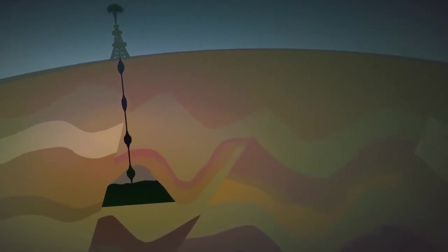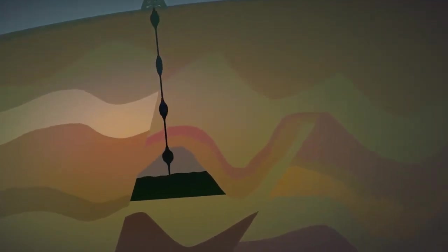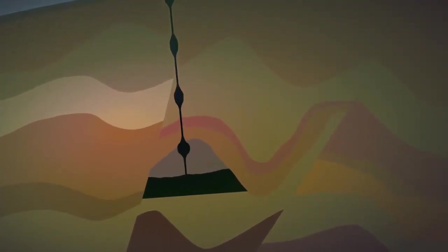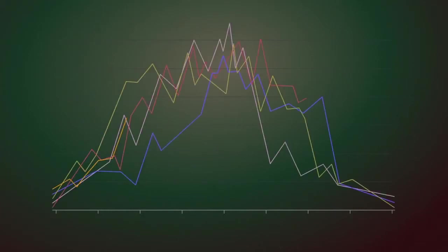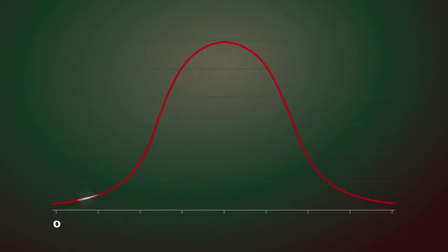Once an oil well starts producing oil, it's only a matter of time before it enters a decline. When many wells are averaged together, the combined graph looks like a bell curve. Typically, it takes 40 years after the peak of discovery for a country to reach its peak of production, after which it enters a permanent fall.